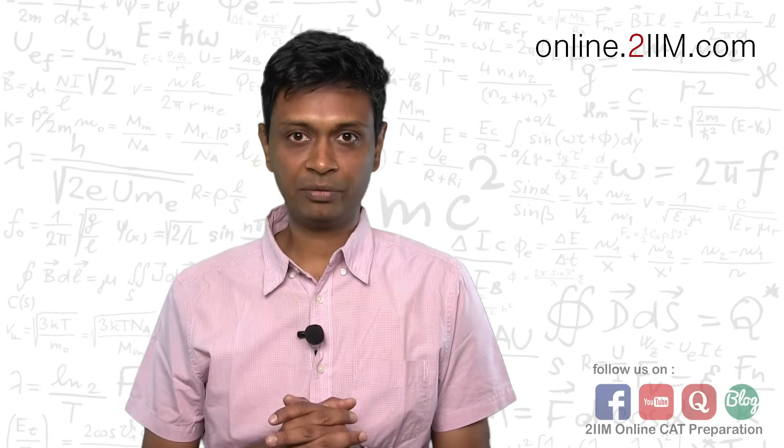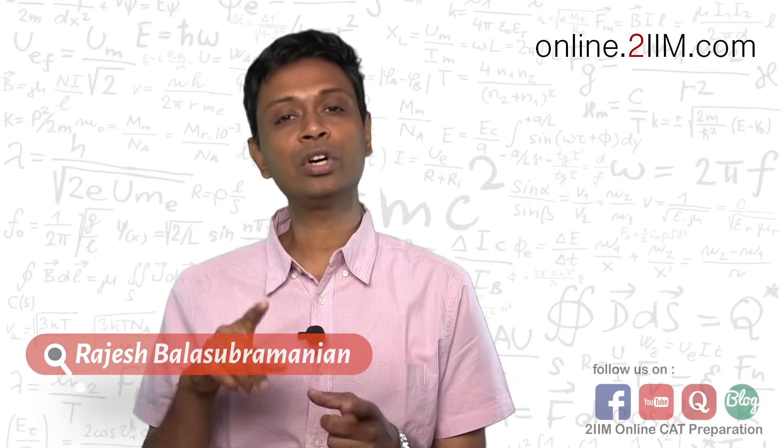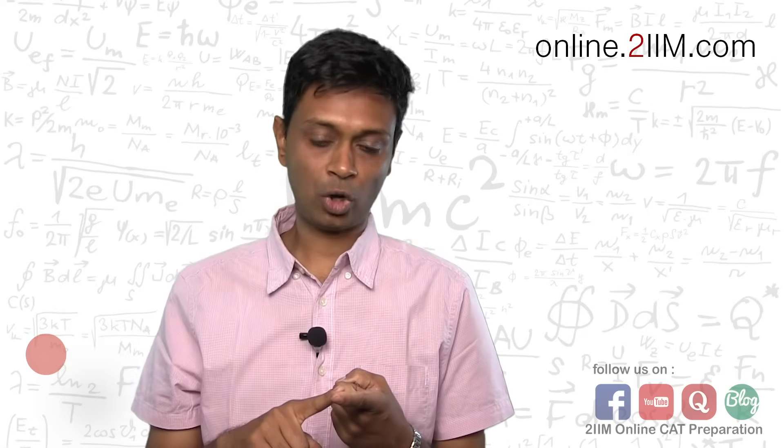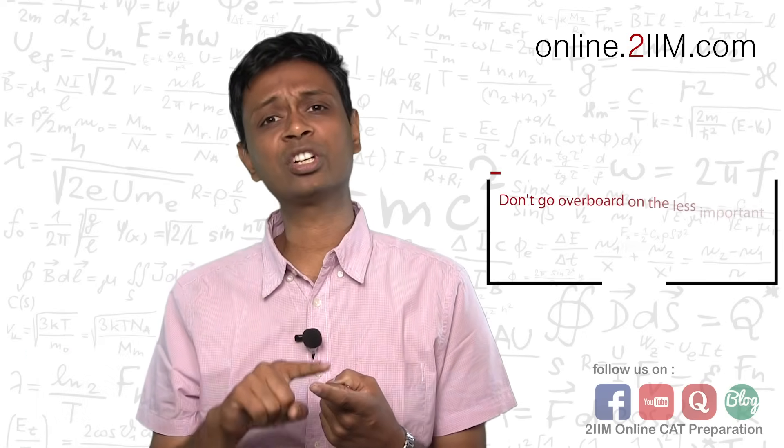The top three things to avoid in quant. We went through the top three things to avoid in verbal. In quant as well, there are a bunch of things that one should be very careful about. The first thing: going overboard in topics such as number system and permutation combination, which are vast.